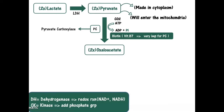The oxaloacetate is needed outside the mitochondria in order to be converted into phosphoenolpyruvate (PEP), one of the most important intermediate molecules of gluconeogenesis, which will ultimately be reversed to form glucose. However, oxaloacetate does not have the ability to cross the mitochondrial membrane.